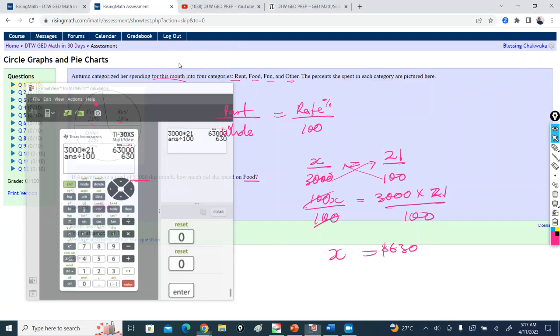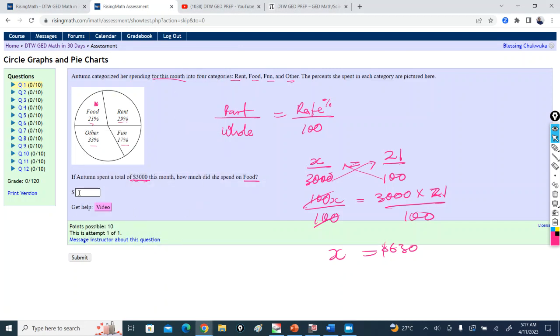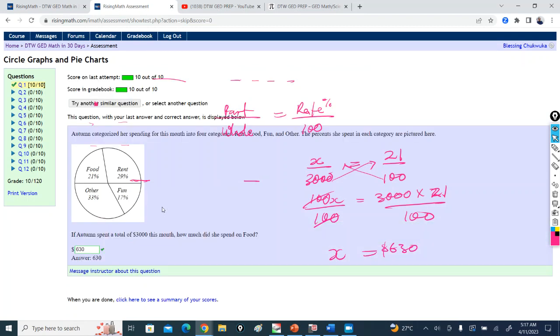Now let's check, let's type it in 630 and submit. Let's see if we're correct. You can see this, we're correct. You can see how you can play around. It's so interactive, this course.